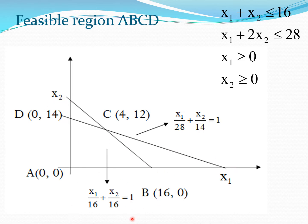Writing the constraints in this intercept form lets us read off the axis intercepts directly. The first line cuts the X1 axis at point B (16, 0) and the X2 axis at (0, 16). The second line intercepts at (28, 0) and (0, 14). With X1 and X2 both greater than 0, the feasible region is the trapezoid defined by vertices A, B, C, and D.